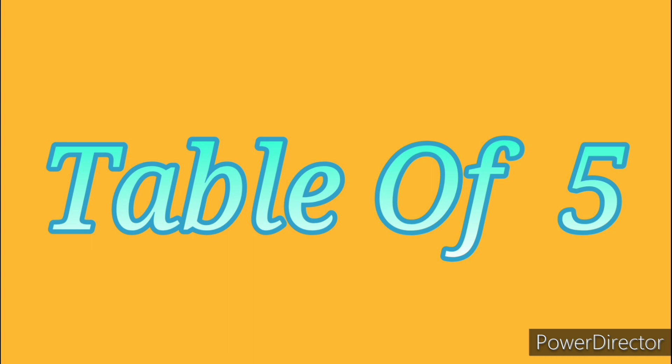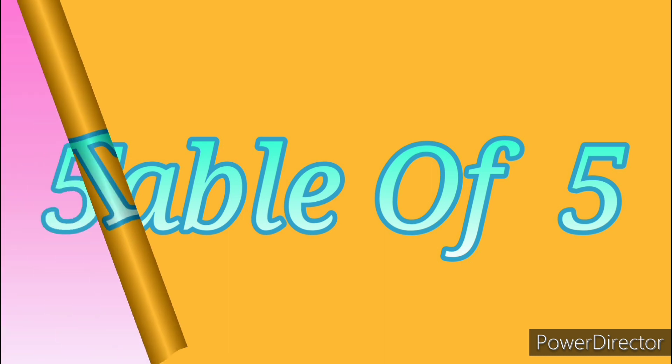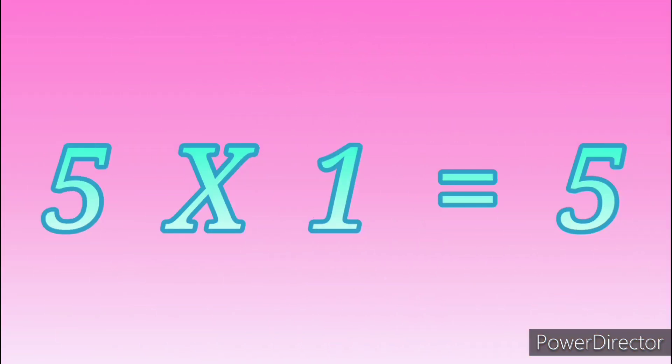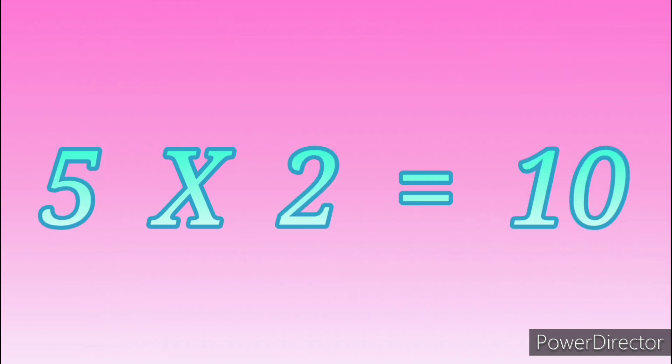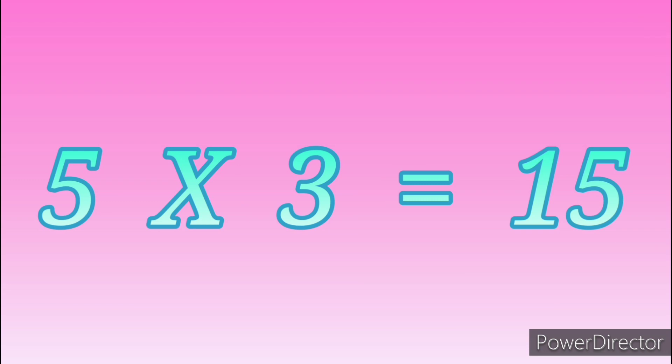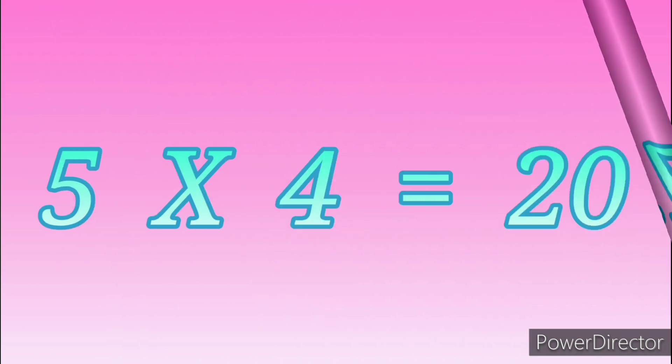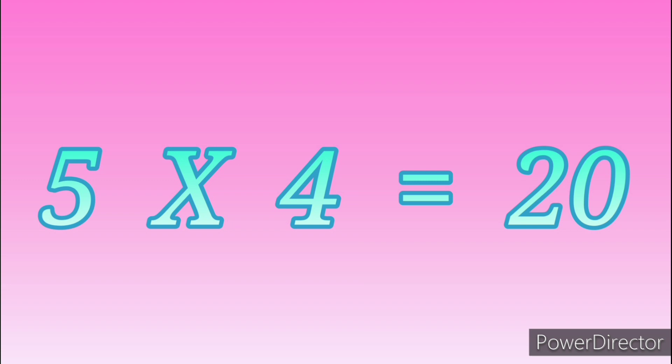Table of Five: 5 ones are 5, 5 twos are 10, 5 threes are 15, 5 fours are 20.